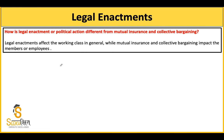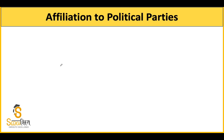Mutual insurance और collective bargaining तथा legal enactment में difference यह है: mutual insurance और collective bargaining में कोई particular union अपने members के लिए method adopt करती है। लेकिन अगर कोई legal enactment आता है तो वो generally पूरे working class को impact करेगा। ऐसा नहीं होगा कि सरकार ने कोई कानून किसी एक particular trade union के लिए बनाया - सरकार का कानून सारे workers पर लागू होगा।